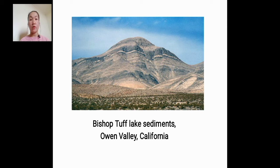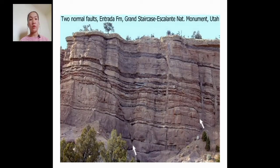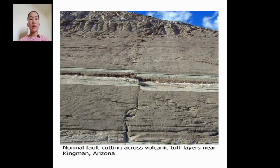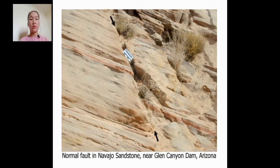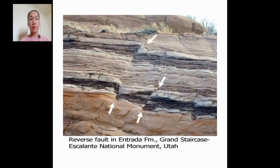This is an example of normal fault — the Bishop Tuff lake sediments in Owens Valley, California. Makikita ninyo yung movement ng normal fault doon sa white lines na nandoon sa bundok — may part na tumaas and then may part na bumaba. This is another example of two normal faults found in Utah. And this is also an example of normal fault sa Arizona — makikita ninyo merong part na tumaas, merong part na bumaba.